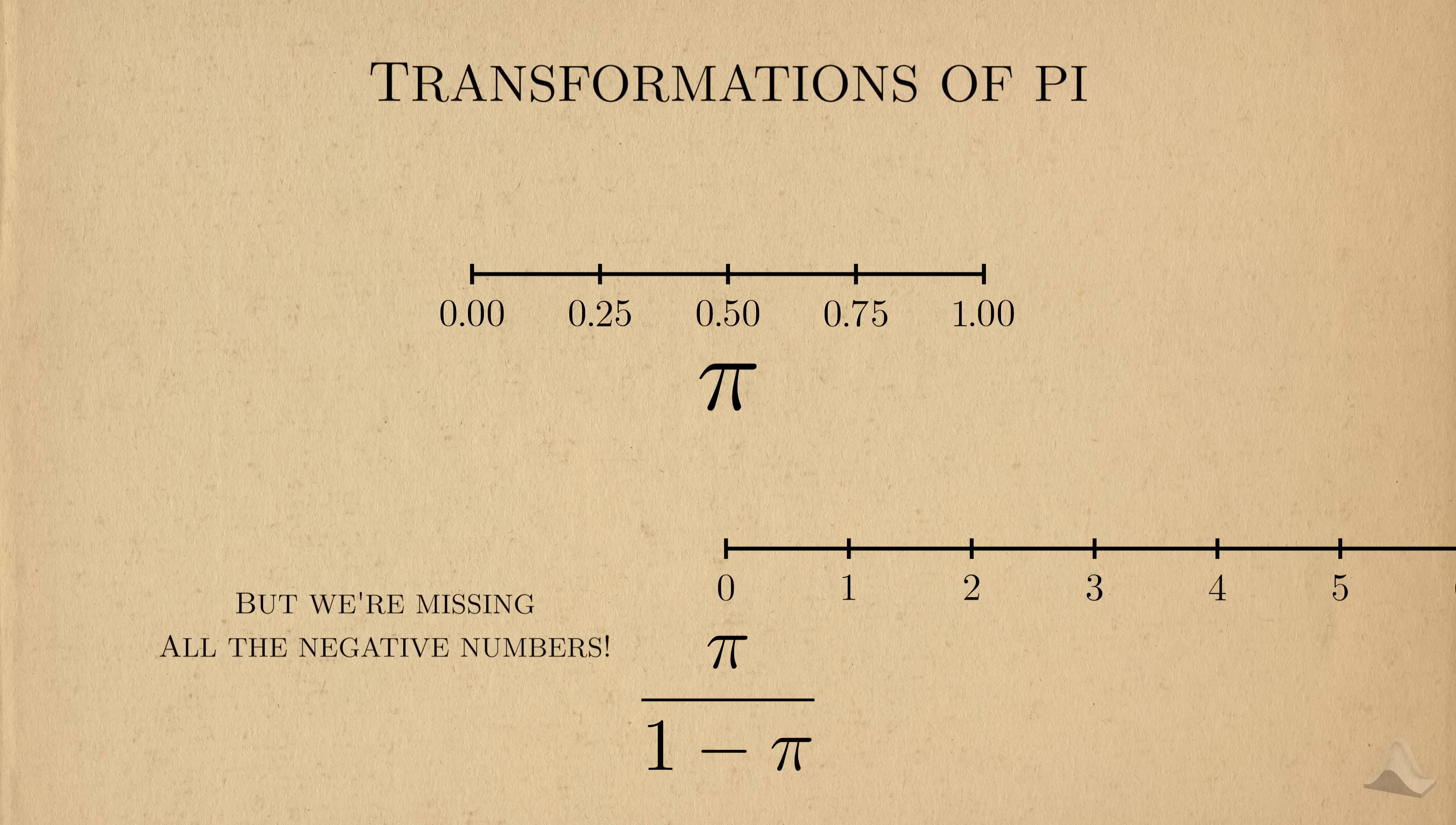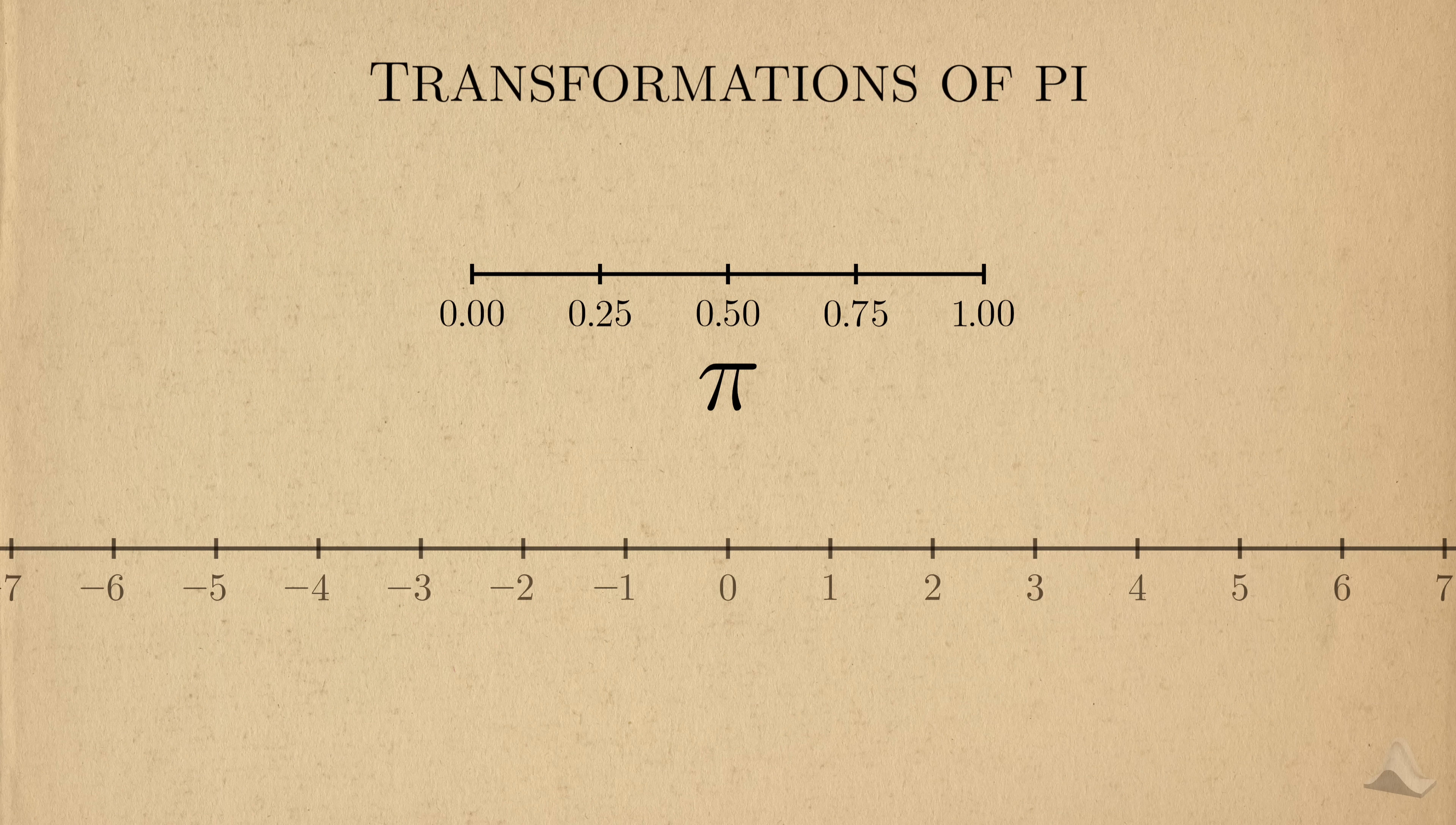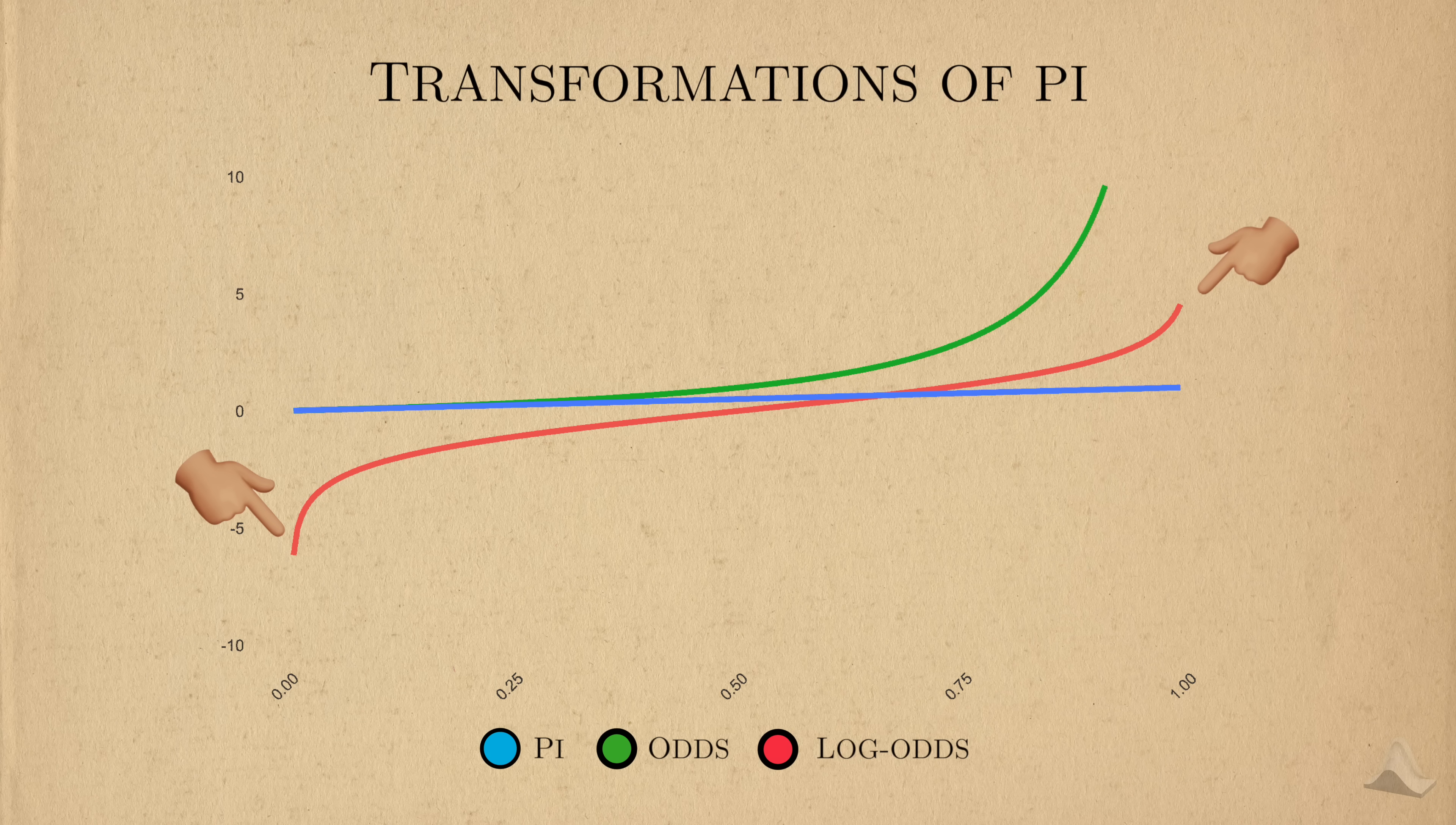But we need a function of pi that will enable us to match the entire real line needed for our linear model. Without getting into the gritty details, the function we need is the log of the odds instead, or log odds for short. From the plot below, you can see that it goes to both negative and positive infinity.